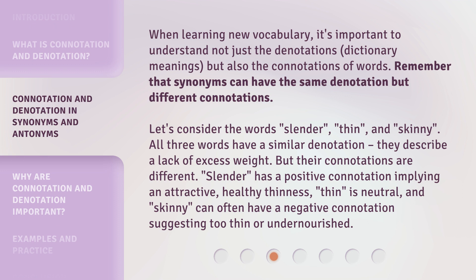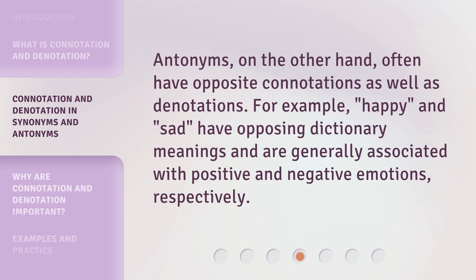But their connotations are different. 'Slender' has a positive connotation implying an attractive, healthy thinness. 'Thin' is neutral. And 'skinny' can often have a negative connotation suggesting too thin or undernourished. Antonyms, on the other hand, often have opposite connotations as well as denotations. For example, 'happy' and 'sad' have opposing dictionary meanings and are generally associated with positive and negative emotions, respectively.